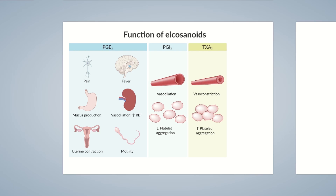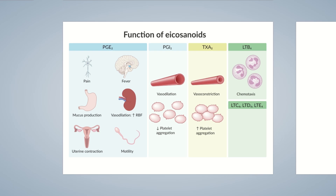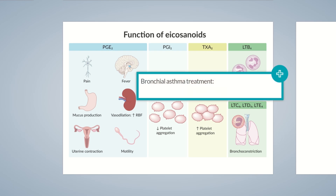Leukotrienes also have various effects on the body. Leukotriene B4, for example, is synthesized by immune cells — especially neutrophils — to attract other immune cells, indicating a chemotactic effect. Leukotrienes C4, D4, and E4 are synthesized in immune cells, especially eosinophils. In the lung, they lead to airway narrowing or bronchoconstriction, which is clinically relevant because excess production of leukotrienes can result in an asthma attack. The bronchoconstrictive effect can be reduced by blocking the receptors of leukotrienes C4, D4, and E4. The drug Montelukast and other leukotriene antagonists ending with '-lukast' are used to block the actions of leukotrienes.